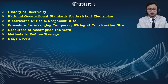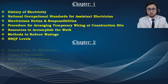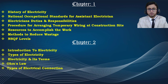Chapter 1 also covers electrician duties and responsibilities, procedure for arranging temporary wiring at construction sites, resources to accomplish the work, methods to reduce wastage, and NSQF — the National Skill Qualification Framework — levels. In chapter 2, we are going to discuss electricity and the different types, like alternating current and direct current.